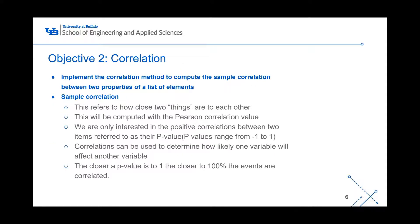Objective two is correlation. You're gonna implement the correlation method to compute the sample correlation between two properties of a list of elements. Sample correlation refers to how close two things are to each other. One example given is calculating electricity usage based on gas and water usage. This is computed with the Pearson correlation value, which basically comes down to the p-value — that's the short form of it.